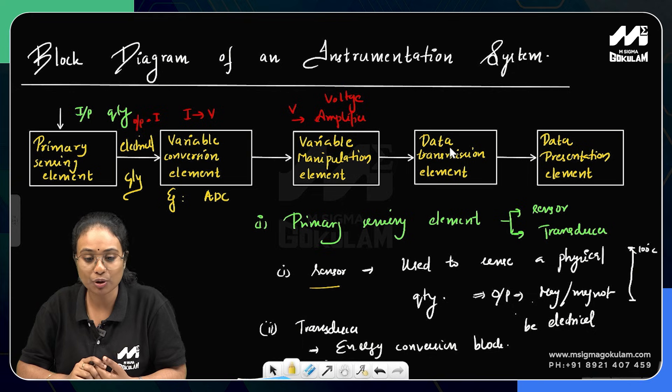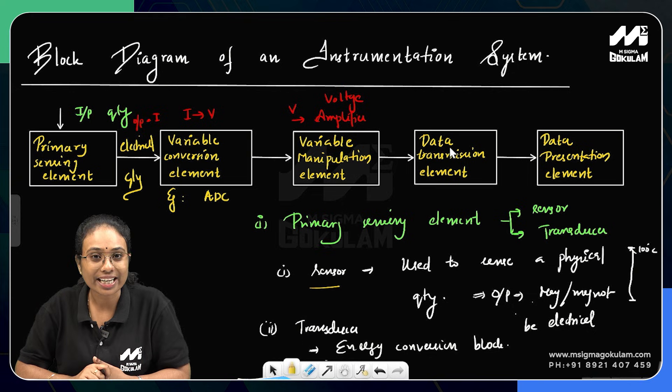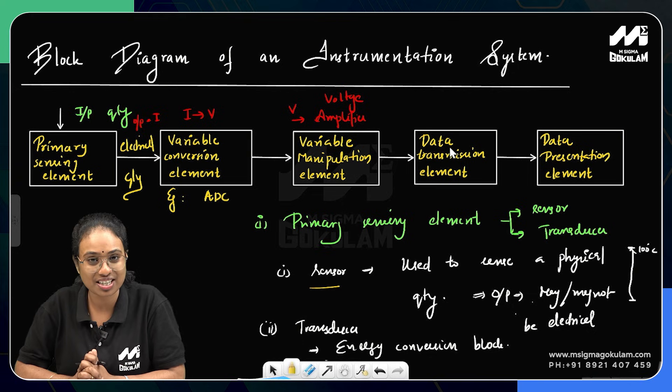This is the block diagram of the instrumentation system: Primary Sensing Element takes input quantity and outputs electrical quantity. Variable Conversion Element converts electrical quantity to the form suitable for Variable Manipulation Element. Variable Manipulation Element is the signal processing block. Data Transmission Block transmits the signal. Data Presentation Element displays the final output.